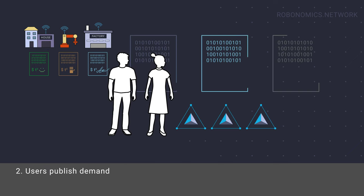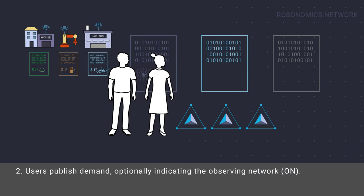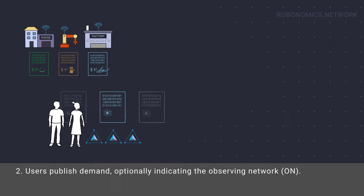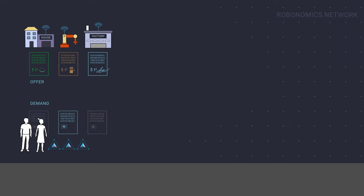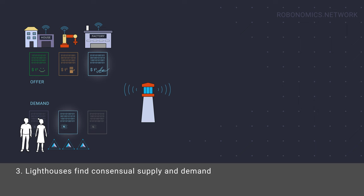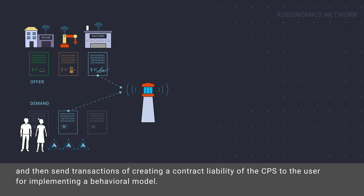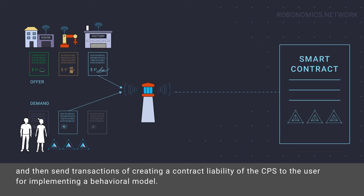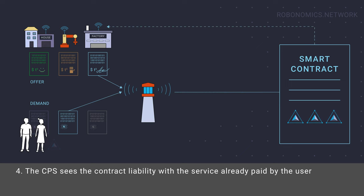Users publish demand, optionally indicating the observing network. Lighthouses find consensual supply and demand, and then send transactions creating a contract liability of the cyber-physical system to the user for implementing a behavioral model.